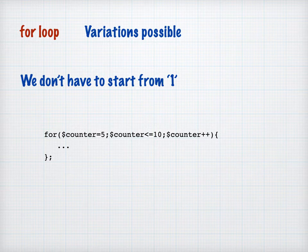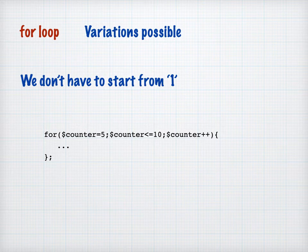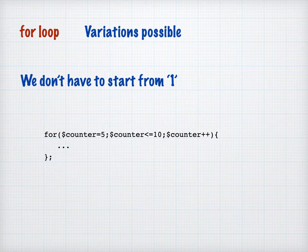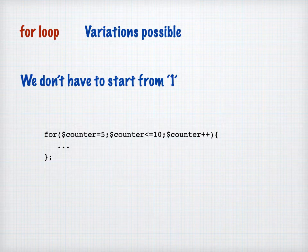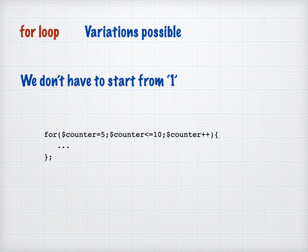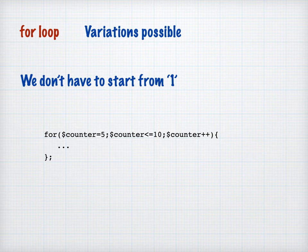So counter will have the values: we'll start with five, do something in the loop, then six, seven, eight, nine, ten. Now notice the less than or equal to, so that still returns true, so we do the thing in the loop. Add one to counter, counter becomes 11, and it's at that point that we drop out of the loop. So we don't actually have to start from zero or one. We could start at some other number.